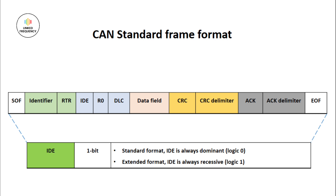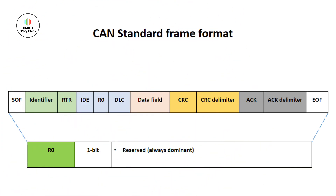Next is IDE — Identifier Extension — which is 1 bit. For the standard frame, the IDE value is dominant, and for the extended frame, it is recessive. If transmitting a standard frame and an extended frame together, the standard frame will be transmitted first because the IDE value for the standard frame is 0, which is of higher priority. R0 is a reserved bit for future use; it is 1 bit with a dominant value.